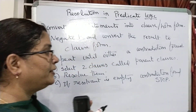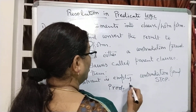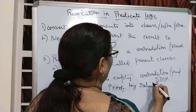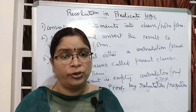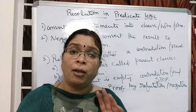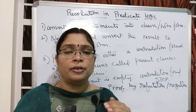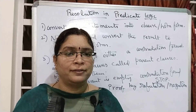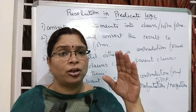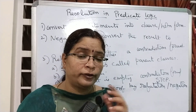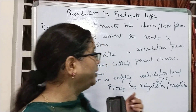The next step is: negate P and convert the result to clause form. In resolution there is a concept also called proof by refutation or proof by negation. What this means is: if I want to prove that Rama is a good boy, I have to start my resolution from 'Rama is a bad boy.' By starting with the negation, I can eventually prove the original statement.